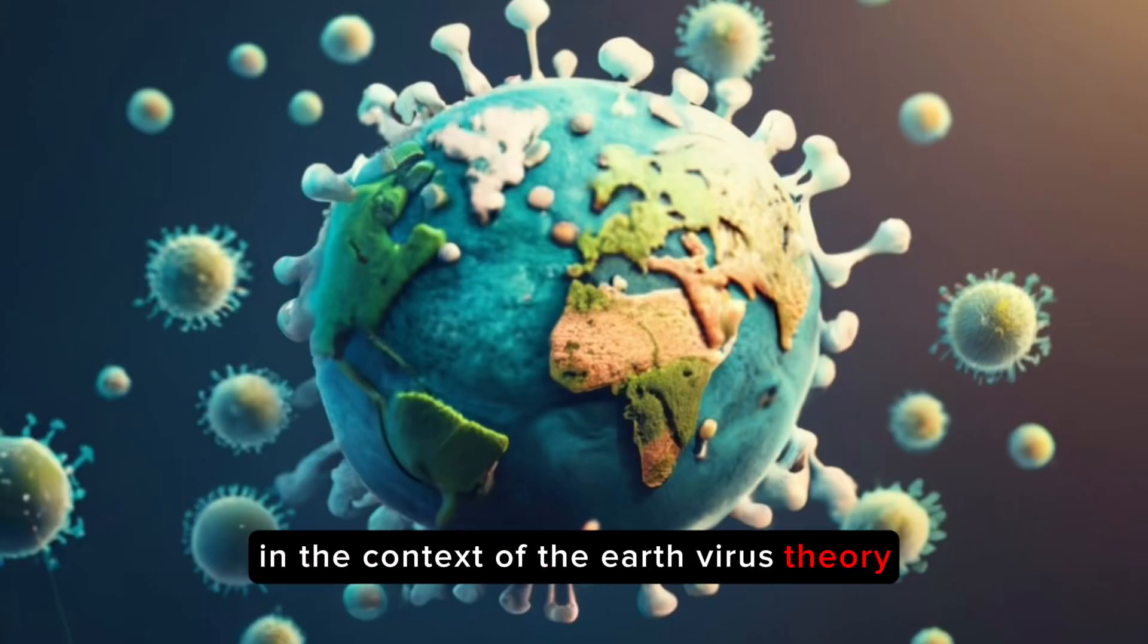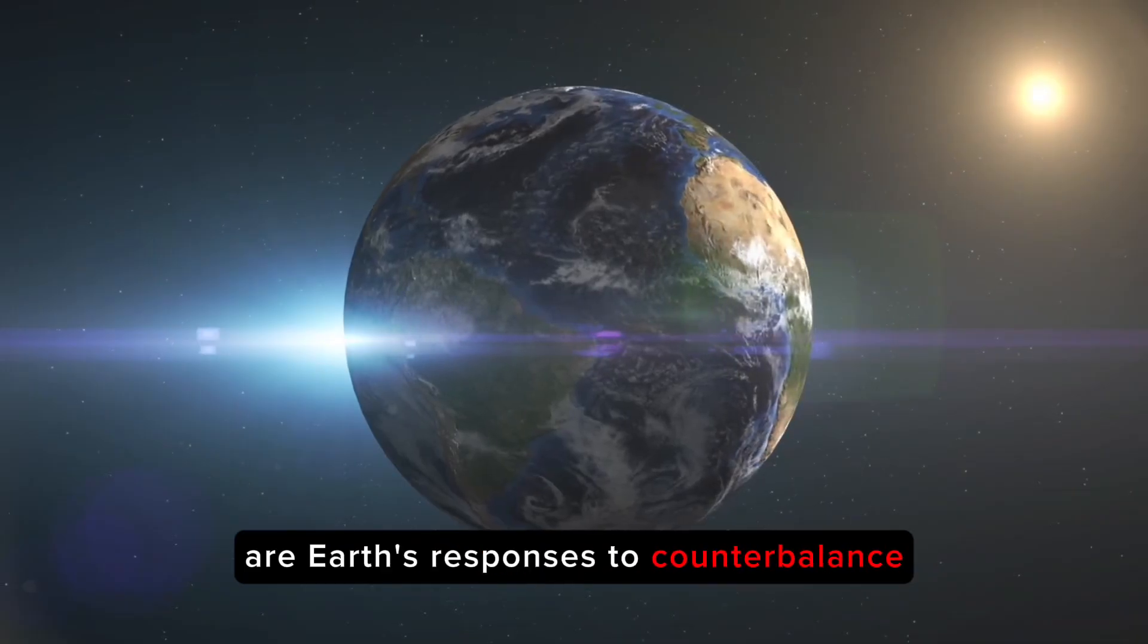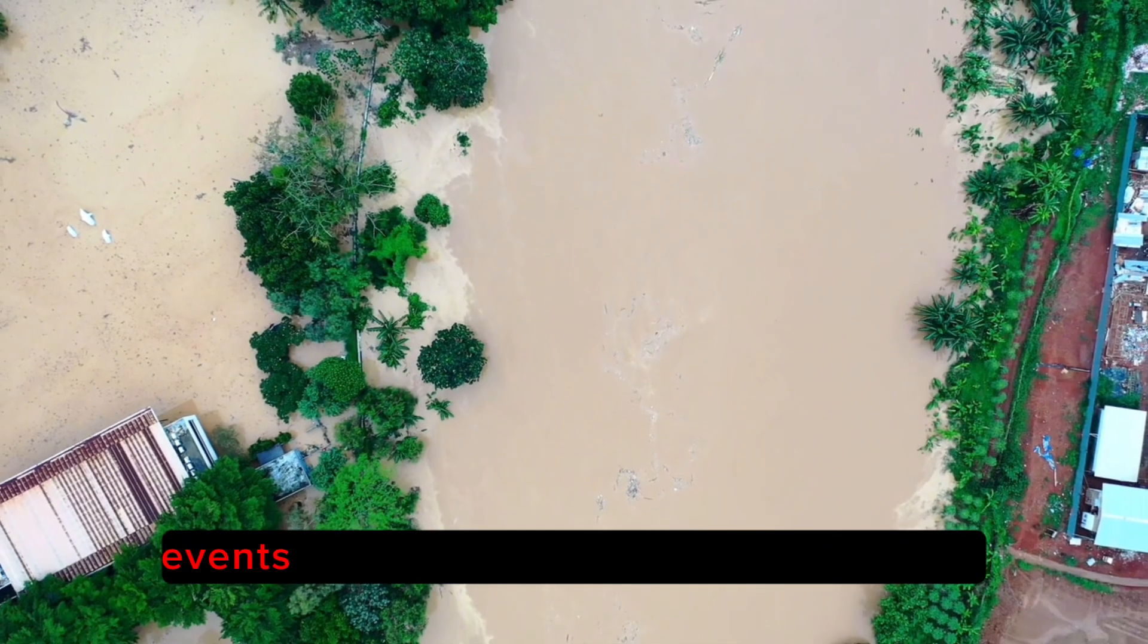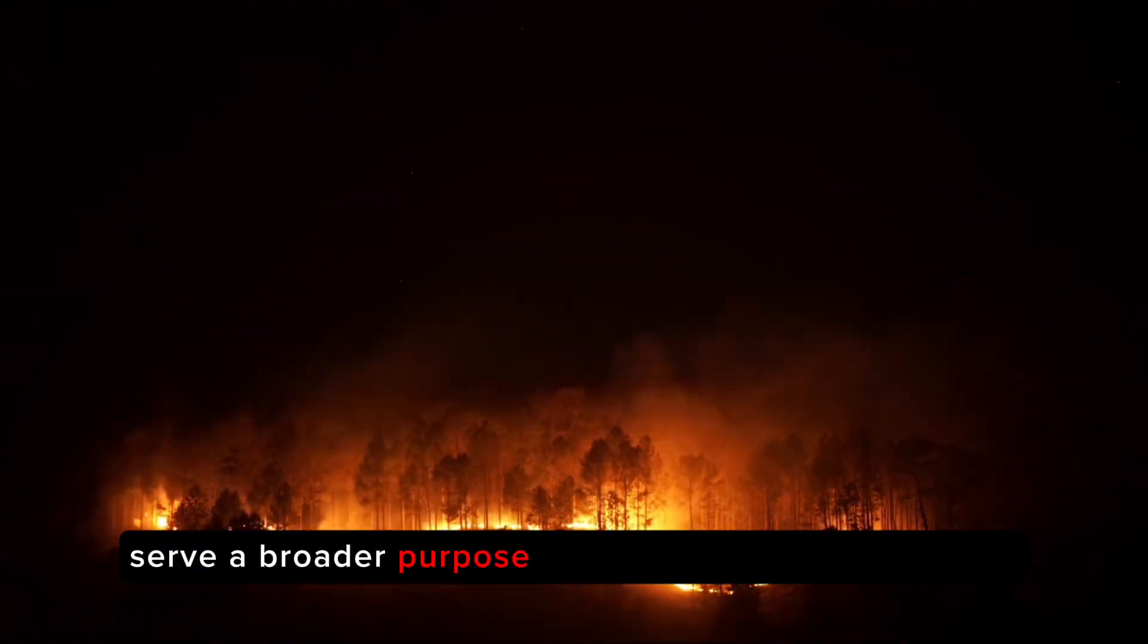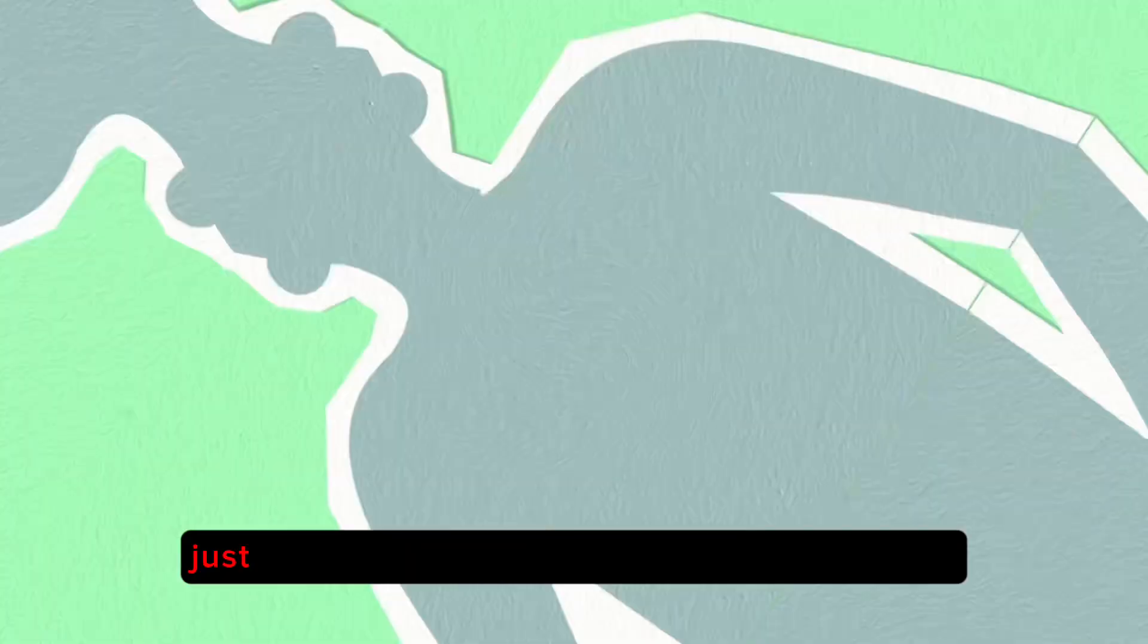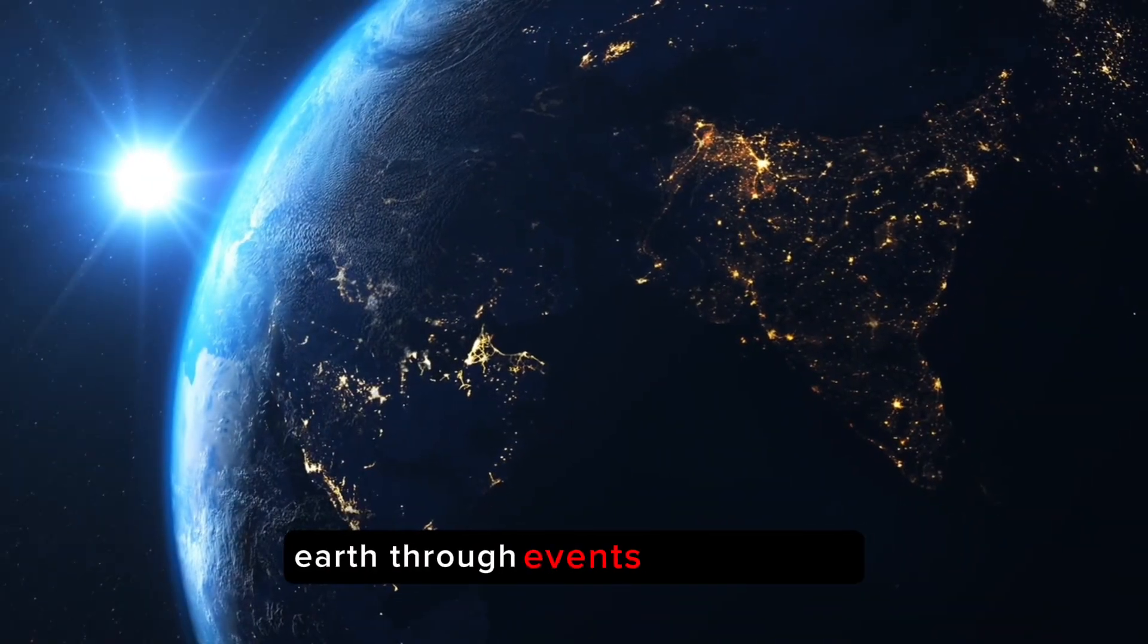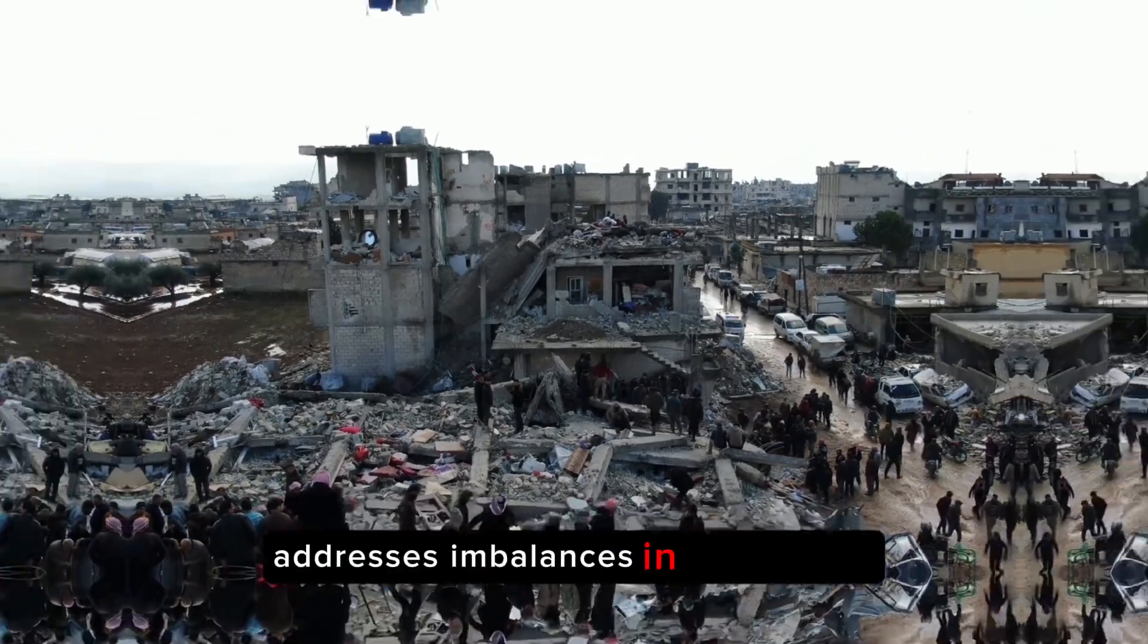In the context of the Earth virus theory, the notion that natural disasters are Earth's responses to counterbalance the disruptive force of humanity is both provocative and highly debated. This perspective suggests that these catastrophic events, often seen as destructive and devastating, serve a broader purpose in the planet's self-regulation. Proponents of this theory argue that natural disasters act as nature's corrective mechanisms, just as the immune system of a living organism responds to infections. Earth, through events like wildfires, hurricanes and earthquakes, addresses imbalances in ecosystems.